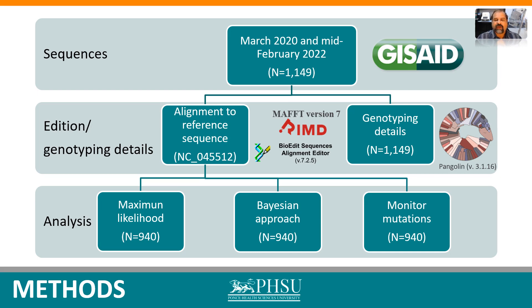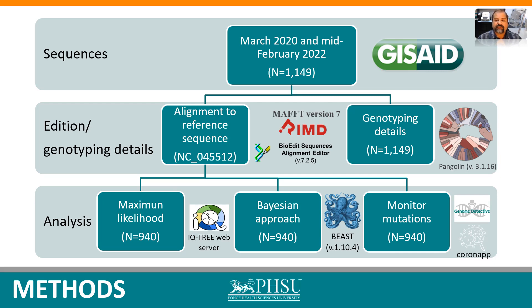Of these sequences, a total of around 900 were selected to perform molecular evolution analysis — specifically those that fully covered the spike region. The sequences used to assess the course of the viral epidemic over time were those collected between March 2020 and February 2022. Phylogenetic relationships were analyzed using the maximum likelihood method implemented by IQ-TREE web server, and the evolutionary rate of the virus was evaluated using the Bayesian Markov Chain Monte Carlo (MCMC) approach implemented in the BEAST software package.